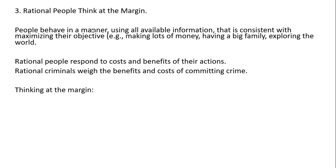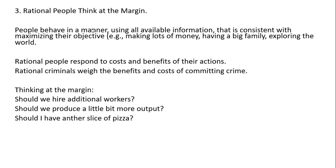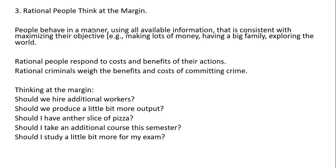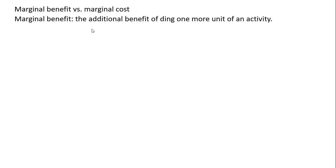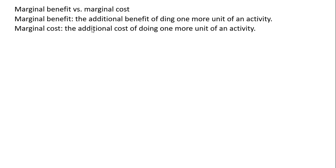So thinking at the margin — rational people think at the margin. Should we hire additional workers? Should we produce a little bit more output? Should I have another slice of pizza? Should I take an additional course this semester? Should I study a little bit more for my exam? Should I work additional hours? These are all decisions made on the margin. When making decisions, rational people compare the marginal benefits versus the marginal cost. The marginal benefit is the additional benefit of doing one more unit of an activity; the marginal cost is the additional cost of doing one more unit of an activity.